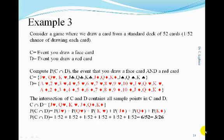Example 3. Consider a game where we draw a card from a standard deck of 52 cards. This means that there is a 1 over 52 chance of drawing each card in the deck. Let's define C as the event that you draw a face card and D as the event that we draw a red card. Ultimately, we want to compute the intersection of events C and D. First, we list all sample points contained in event C — all of our face cards. Then, we list all red cards in the deck as all sample points for event D.